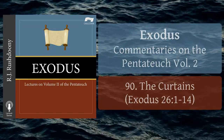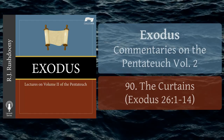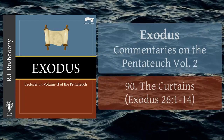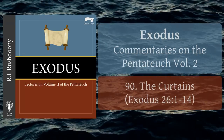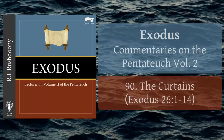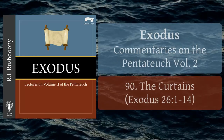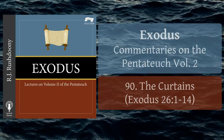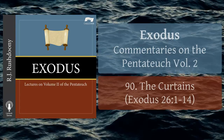And thou shalt make fifty taches of gold, and couple the curtains together with the taches, and it shall be one tabernacle. And thou shalt make fifty loops on the edge of the one curtain that is outmost in the coupling, and fifty loops in the edge of the curtain which coupleth the second. And thou shalt make fifty taches of brass, and put the taches into the loops, and couple the tent together that it may be one.